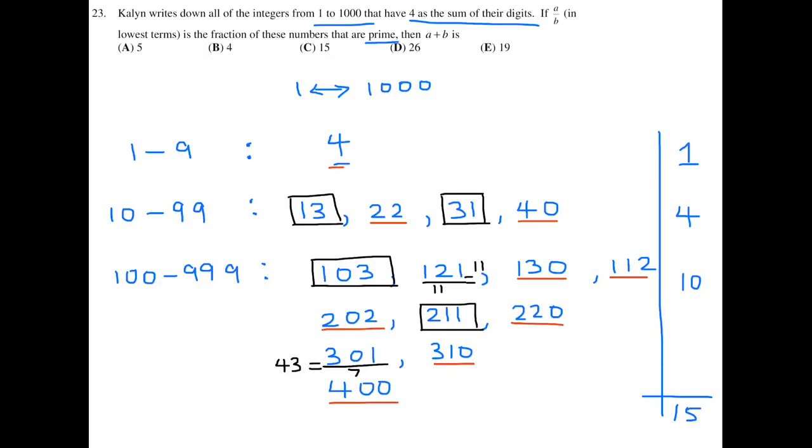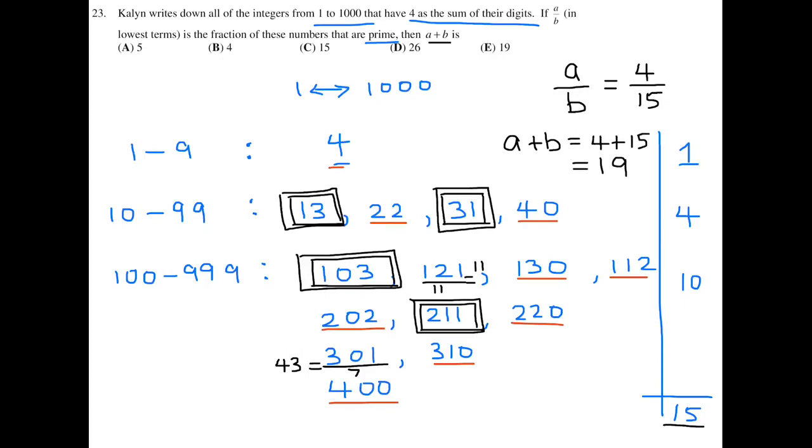So, the only ones that are primes were 13, 31, 103, and 211. So, 4 of these out of the 15. So, A over B is the fraction of these numbers that are prime. So, how many were prime? 4 out of 15. So, that is what A over B is. Now, they want us to find A plus B. A plus B would just be 4 plus 15. And, therefore, the answer is 19. So, for 23, the answer is E.